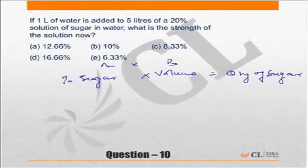This is in the form of A times B equals C. Percentage of sugar multiplied by the volume of the solution equals the quantity of sugar. For example, in this question, the volume is 5 liters, percentage is 20%, so quantity of sugar is 1.